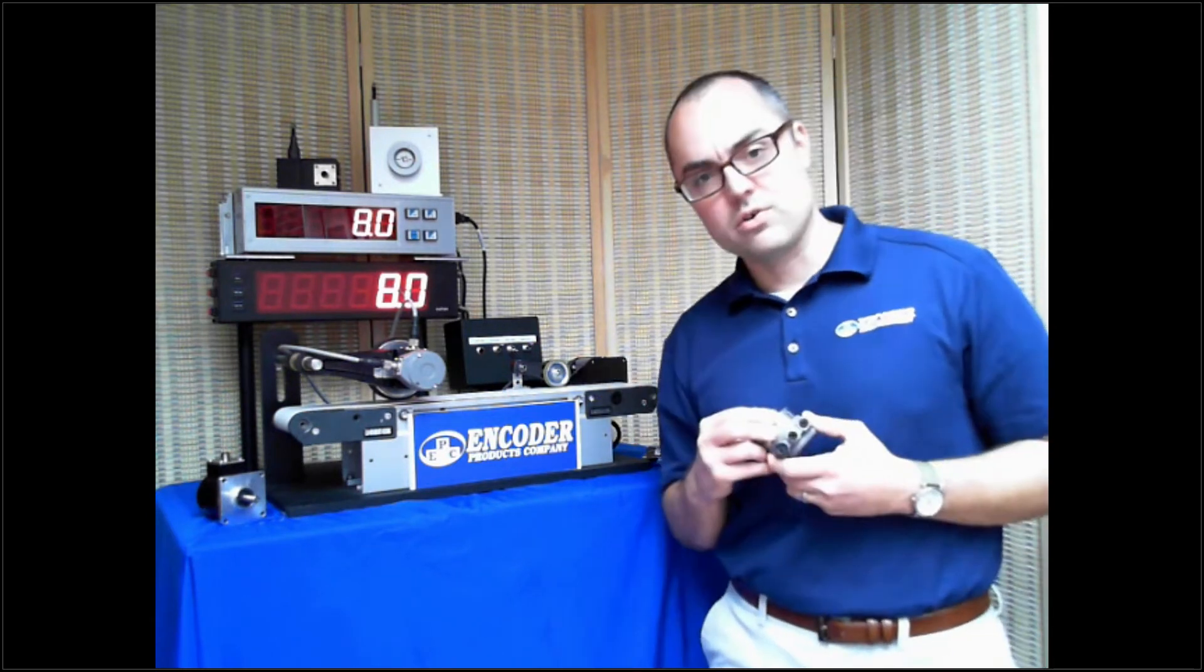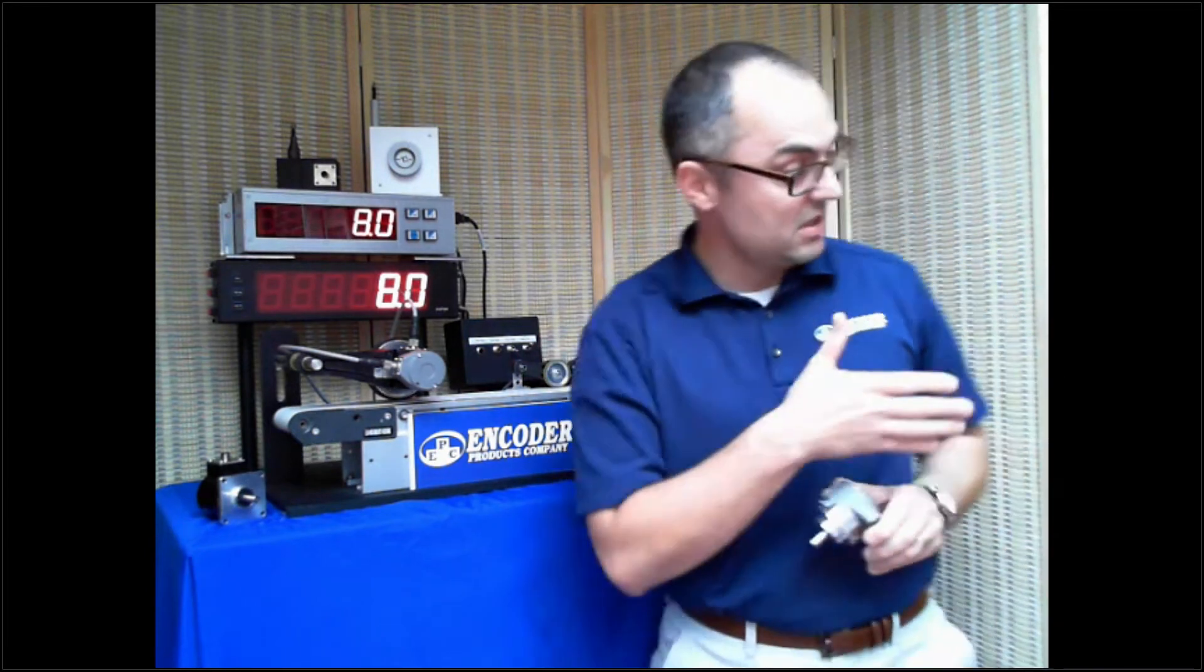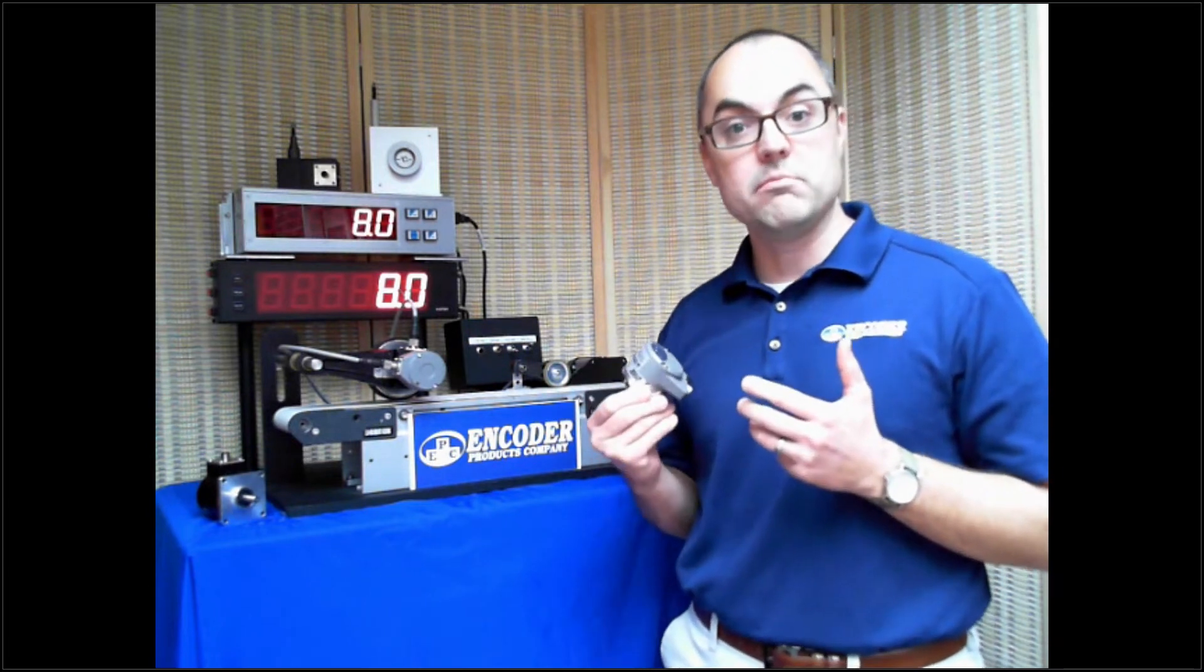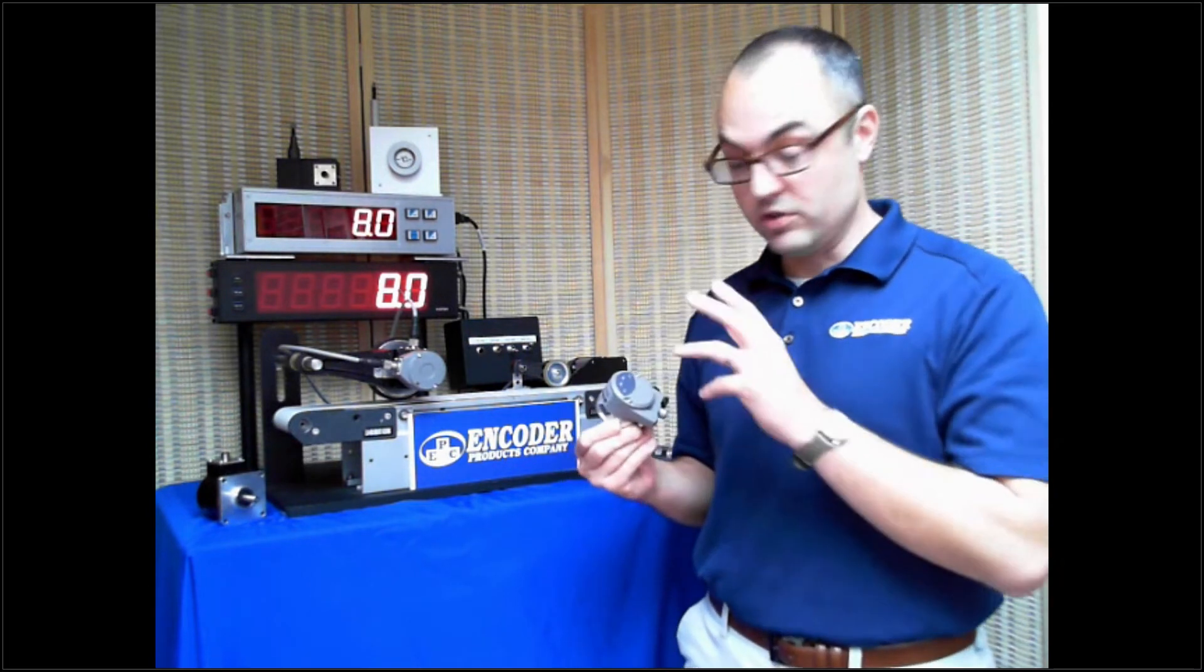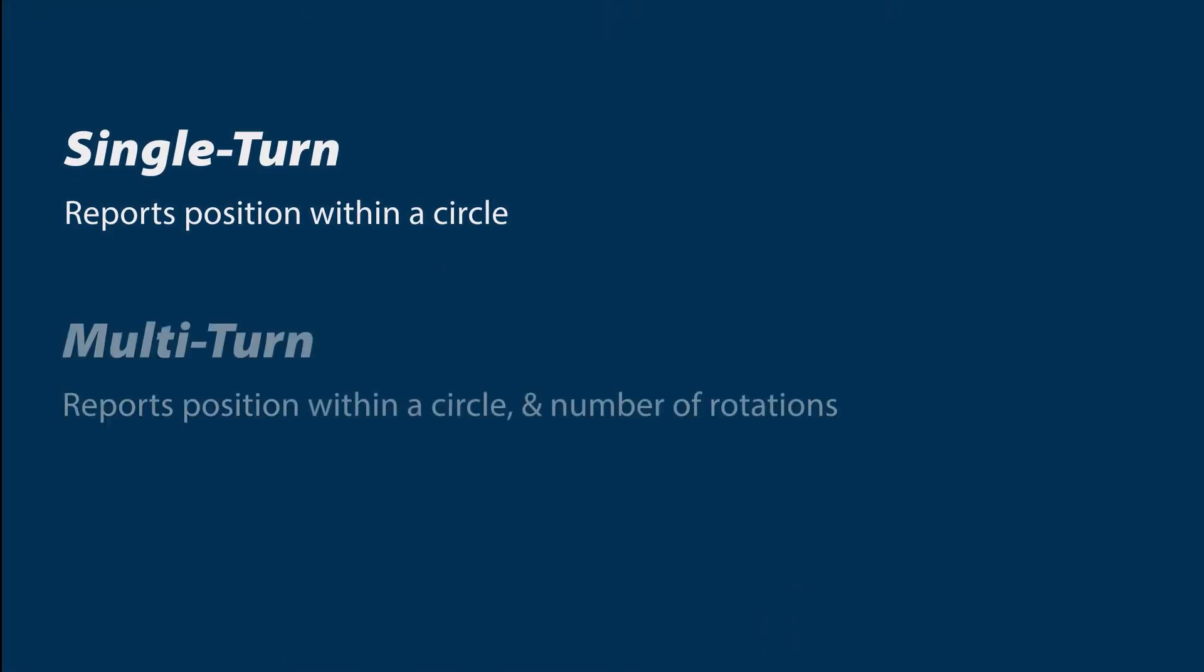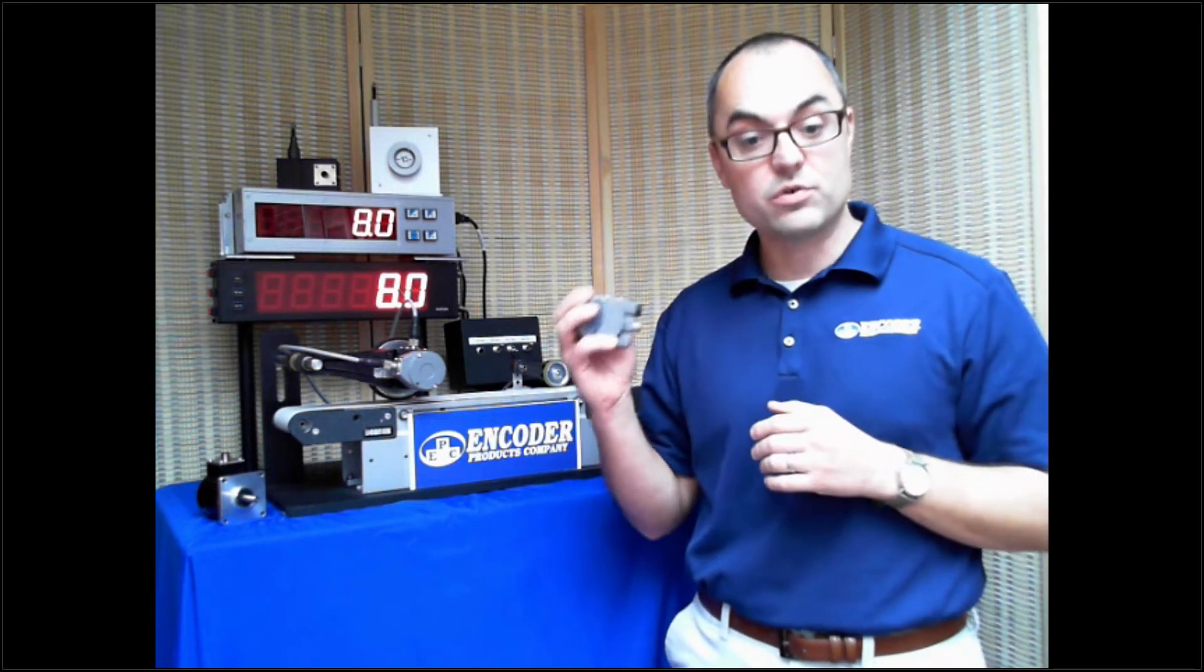Now, not only will an absolute encoder give you the position within a circle, zero degrees, 10 degrees, 270 degrees, it'll also give you the number of rotations if you select what's called a multi-turning encoder. So, the two flavors of absolute encoders are single-turning encoders. They give you a position within a circle. And then multi-turning encoders, they give you a position within a circle and the number of times you've gone around in a circle. If we go back to my watch analogy, your watch is a multi-turn absolute encoder. Your hour hand tells you how many times the minute hand has gone around. That's all the hour hand is, is a turns counter.